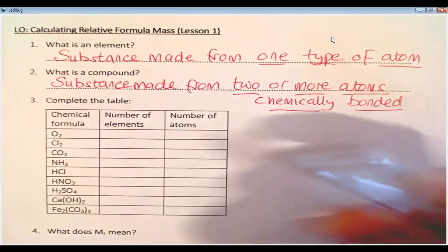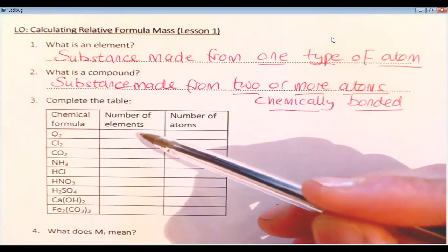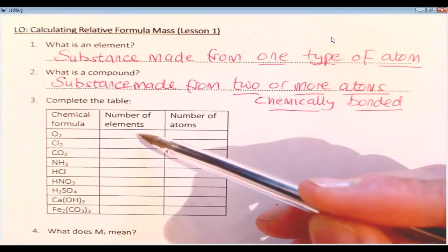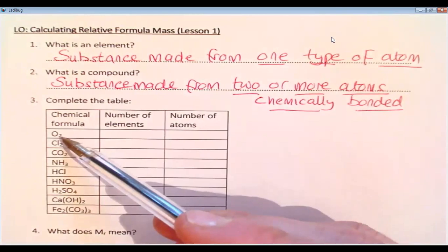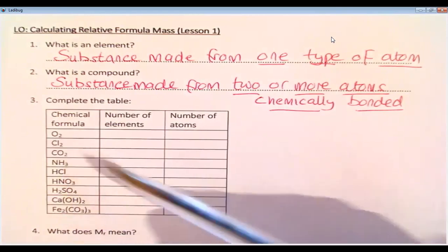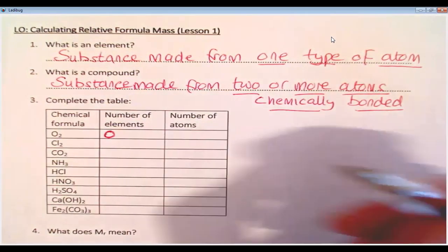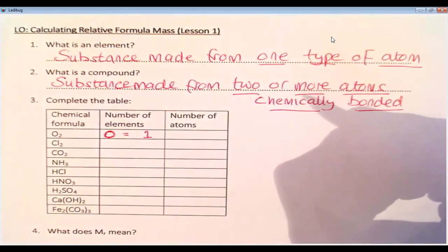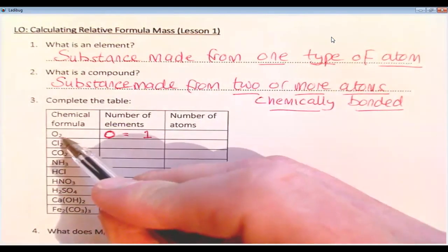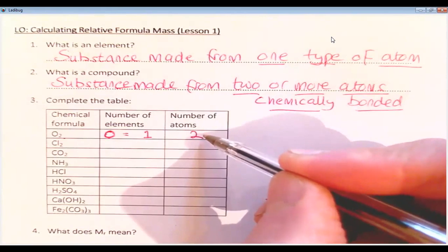Then we've got a table which has some chemicals on the left hand side. What we're just going to do is make sure we can distinguish the difference between counting elements and counting the number of atoms. So here I have the chemical formula O2, which you'll recognize as oxygen. So the element I have there is O, which stands for oxygen. So I've only got one element. The number of atoms, this little two down here, indicates that I've actually got two atoms. So there is one element, which is oxygen, but there are two atoms of oxygen.